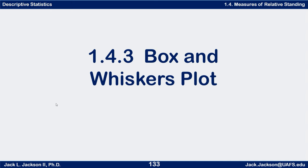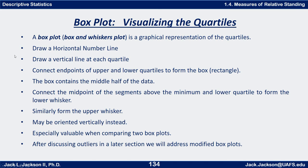This is Jack Jackson back again, and this time we're going to be looking at box and whiskers plots. We're continuing our discussion of descriptive statistics and more specifically measures of relative standing. In our last video we talked about the five number summary known as the quartiles: minimum, Q1, median, Q3, and maximum. A box and whiskers plot gives us a visual way of visualizing that five number set of quartiles — it's also called just a box plot.